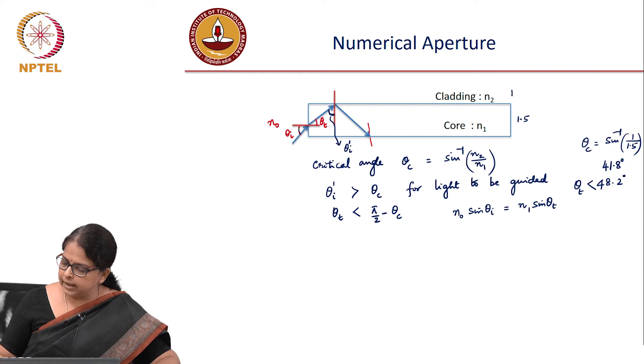For light to be guided, sin θᵢ and sin θₜ are proportional. This means sin θᵢ must be less than (n₁/n₀) sin θₜ.